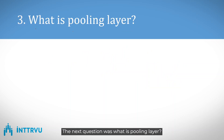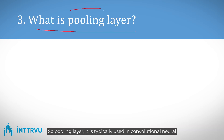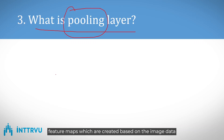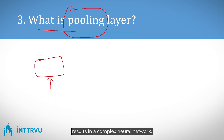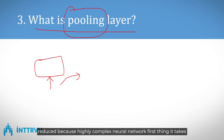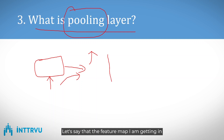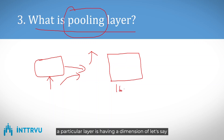The next question was: what is a pooling layer? A pooling layer is typically used in convolutional neural networks, where high-dimensional feature maps are created from image data. High-dimensional feature maps result in a complex neural network, which takes longer to train and can cause overfitting. So the pooling layer is used to reduce the dimension of the feature maps — for example, from 16 by 16 down to a smaller size.